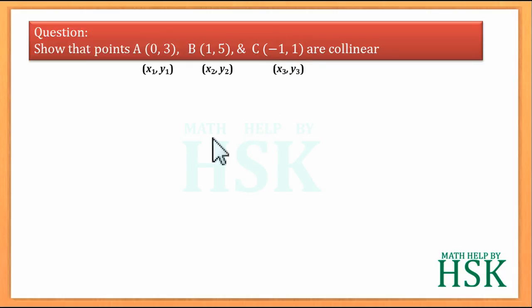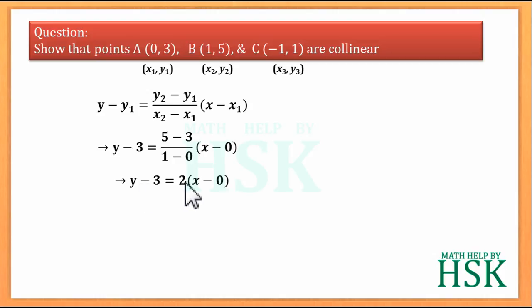Simply placing the values of X1, Y1, and X2, Y2 in the two point form of the equation of the line we get Y minus 3 is equal to 5 minus 3 upon 1 minus 0 into X minus 0. On simplifying the equation we get Y minus 3 is equal to 2 into X minus 0, or Y is equal to 2X plus 3.